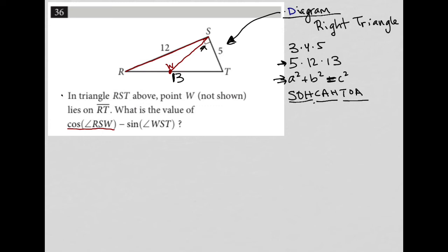so that's cosine of angle RSW minus the sine, which I'll use in green, minus the sine of angle WST. So WST would be there.